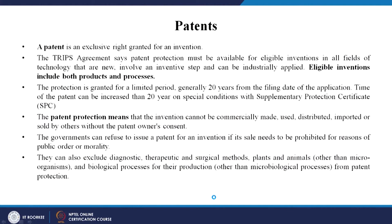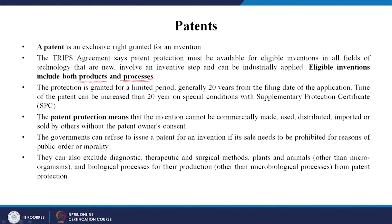A patent is an exclusive right granted for an invention. The TRIPS agreement says patent protection must be available for eligible inventions in all fields of technology that are new, involve an inventive step, and can be industrially applied. There are two kinds of patents: product patents and process patents. Sometimes others can copy the process and form a similar product with a different name, causing a severe loss to the original manufacturer. Protection is granted generally for 20 years from the filing date.